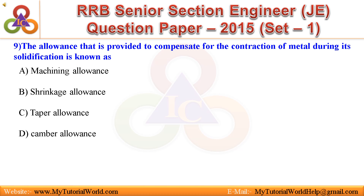Question 9: The allowance that is provided to compensate for the contraction of metal during its solidification is known as — A. Machining allowance, B. Shrinkage allowance, C. Taper allowance, D. Camber allowance. Answer is: Shrinkage allowance.